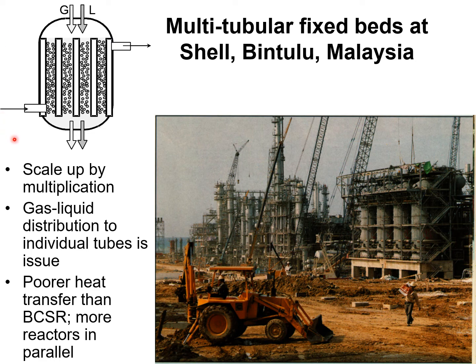Here is a schematic of a multi-tubular trickle bed reactor for Fischer-Tropsch synthesis, where the catalyst is packed into tubes typically about two inches in diameter. An important advantage of the multi-tubular trickle bed reactor is that in theory the scale-up can be achieved by multiplication, because the development of the process can in principle be carried out in a single tube or in a group of say four tubes. The distribution of gas and liquid evenly through each of these tubes is an issue that needs to be addressed.